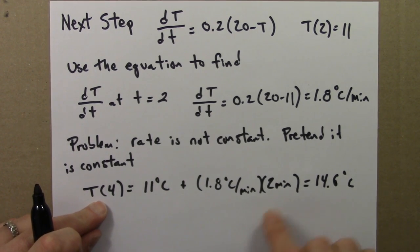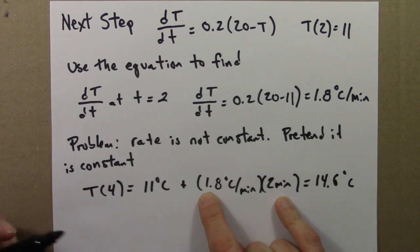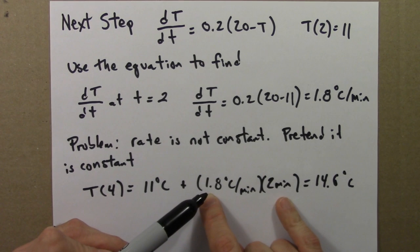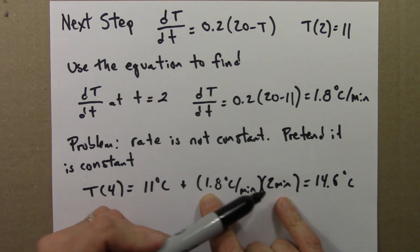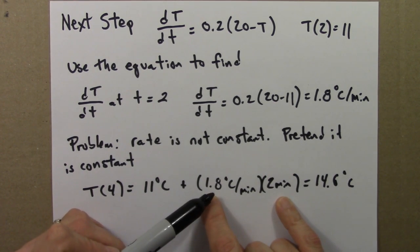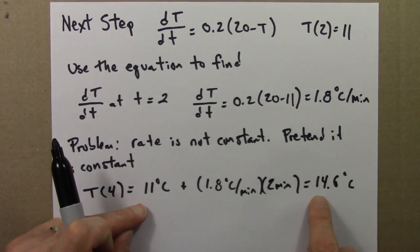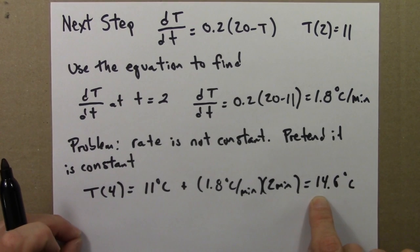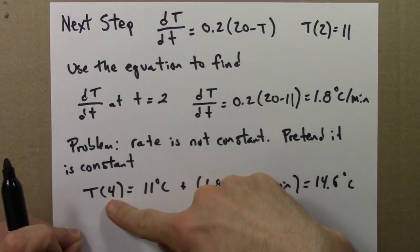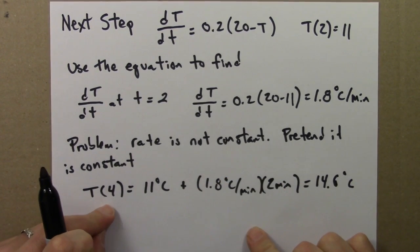And then we can figure out the temperature at time 4, 4 minutes in. In these 2 minutes that we're pretending, how much temperature increase do we have? Well, it's 1.8 degrees per minute for 2 minutes. That's 3.6. 3.6 plus 11, where we started, gives us 14.6. So now I know the temperature at T equals 4 minutes.